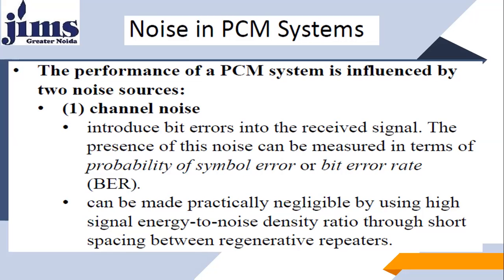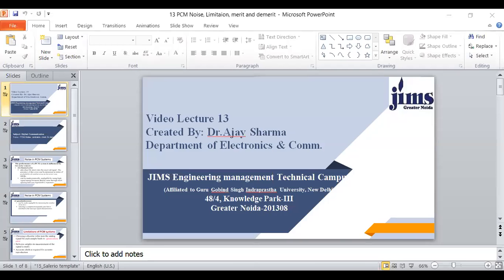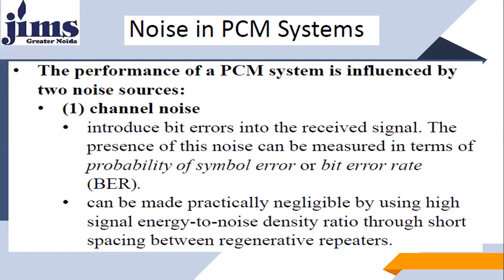One noise source is channel noise. Channel noise introduces bit errors into the received signal. The presence of this noise can be measured in terms of probability of symbol error or bit error rate. Because of channel noise coming from the channel, there will be chances of bit error rate. First of all, let us understand what bit error rate is.